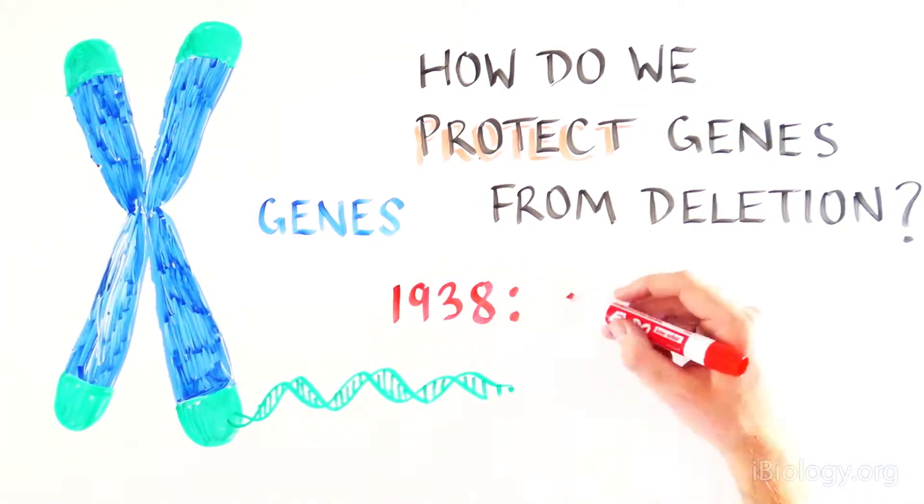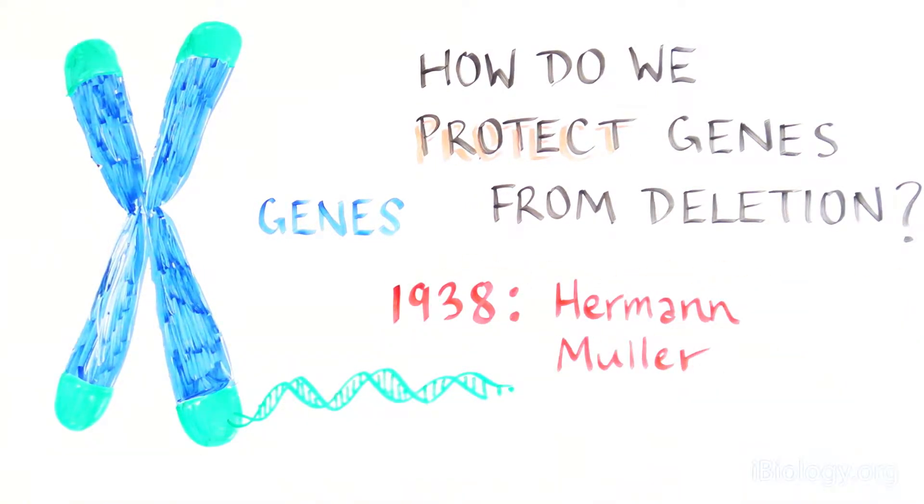In 1938, Herman Muller observed that the ends of linear chromosomes had unique properties and called this region the telomere.